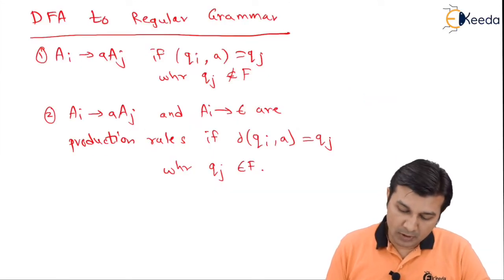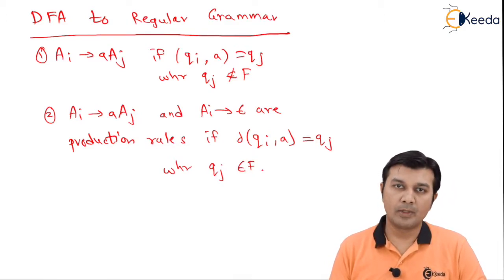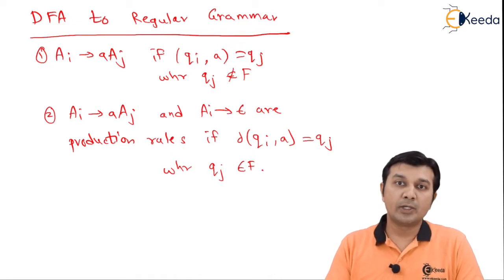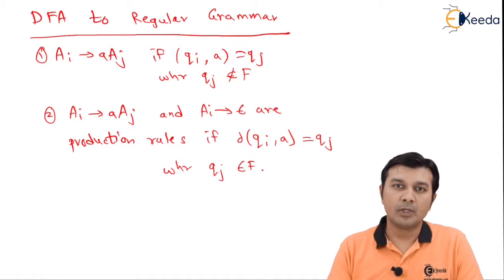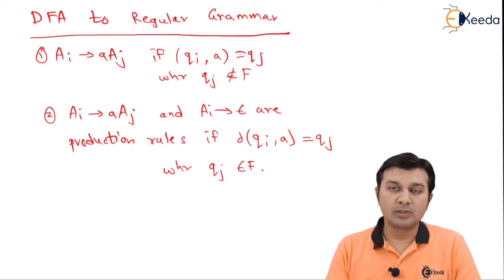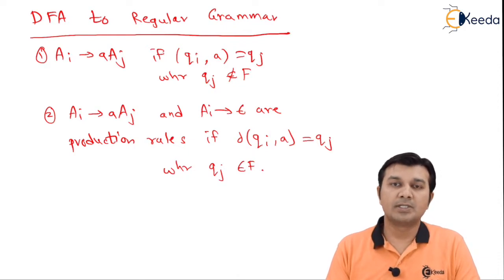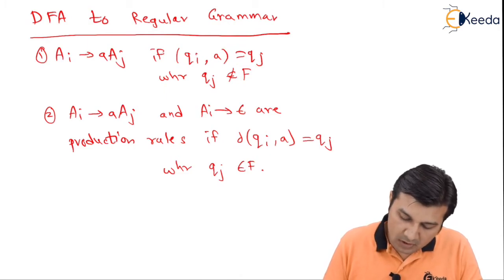When I say I want to convert a deterministic finite automata to a regular grammar, we know that a state diagram is going to be converted into productions, and for that we have only two simple rules. This topic is going to be very light for you, and frankly speaking you will understand the topic as you solve the problem. Only looking at the rules, we are not going to understand things as fast as we are going to understand them with the help of problems. So let us first focus on the procedure.